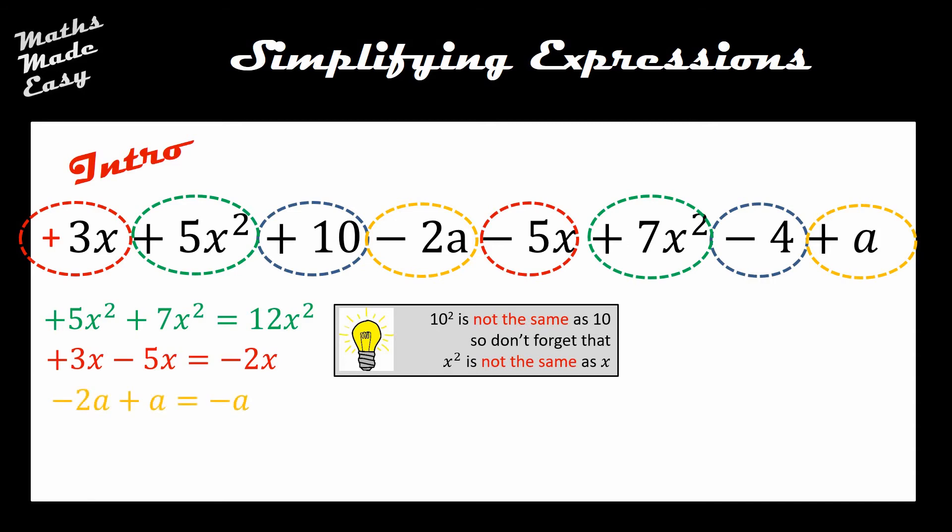Moving on to the next category of term, I'm going to look at the a's and I can see that I've got negative 2a and a positive a, leaving me overall with a negative 1a, and obviously we don't need to write the 1 there. The final ones I'm going to combine are just my numbers, my integers, so plus 10 minus the 4 gives me positive 6. So these are all of the terms that are going to be left over after I've collected the like terms and simplified the expression. The whole thing is going to reduce down to 12x squared minus 2x minus a and plus 6.